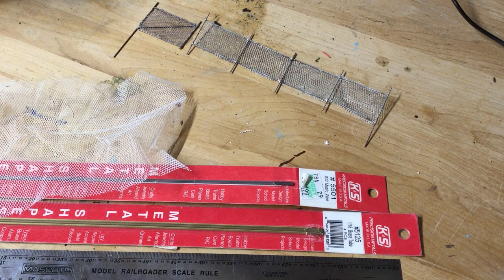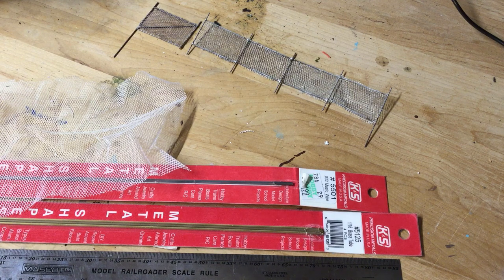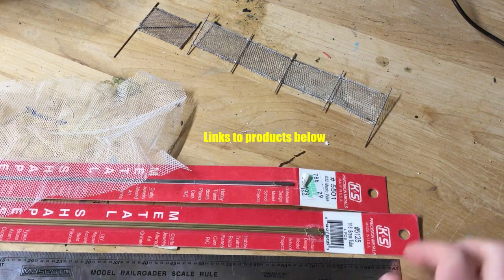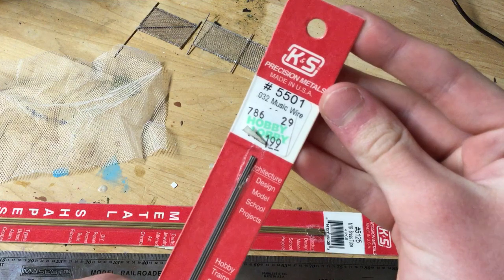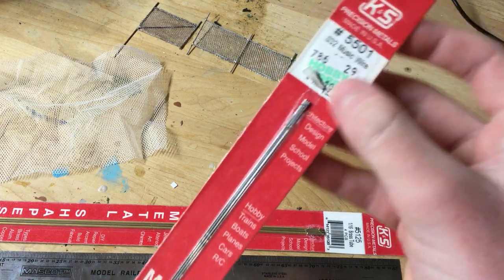I'm building mine in HO scale, but this can fairly easily be adapted to any scale. I've gathered my materials here. You'll need K&S Precision Metals 0.032 music wire.